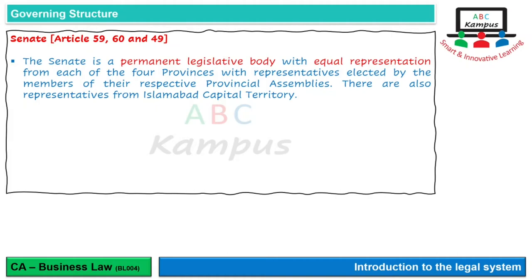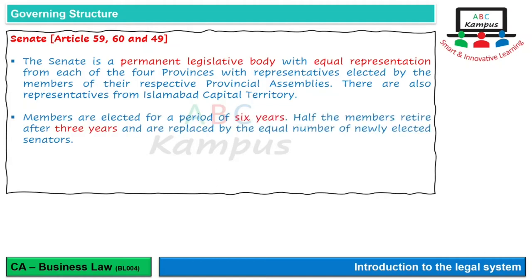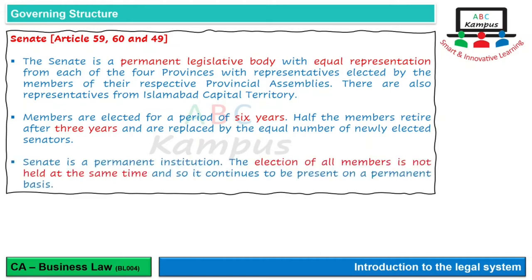وہاں سے بھی کچھ لوگ ہوتے ہیں - Islamabad Capital Territory سے بھی representatives ہوتے ہیں Senate میں. Members are elected for a period of six years، یعنی جو بھی شخص Senator بنتا ہے وہ six years کے لیے بنتا ہے۔ لیکن Senate میں ہر تین سال کے بعد election ہو رہا ہوتا ہے، کیونکہ آدھے لوگوں کا election ہو جاتا ہے اور پھر وہ replace ہو جاتے ہیں - پھر جو پرانے والے آدھے رہ جاتے ہیں پھر ان کا election ہوتا ہے اور نئے elect ہو جاتے ہیں۔ Senate permanent institution ہے - تمام members کا election ایک ساتھ نہیں ہوتا۔